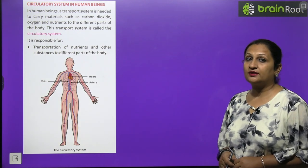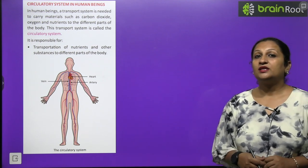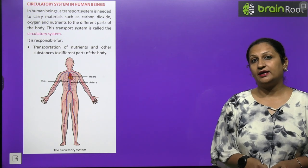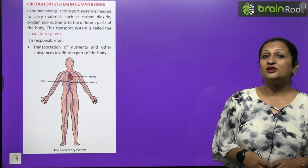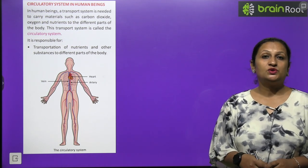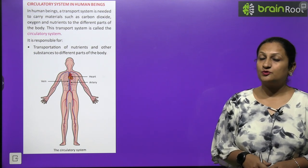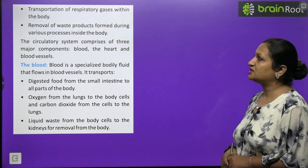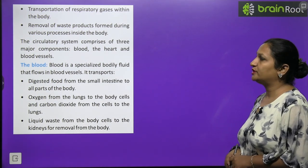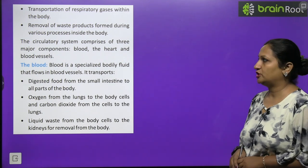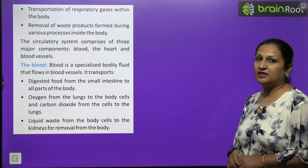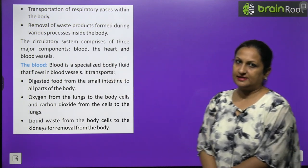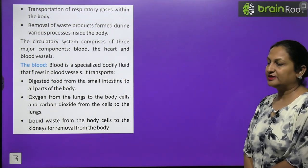The circulatory system delivers nutrients to every cell so that oxidation can occur, brings oxygen to each cell so it can oxidize food, transports carbon dioxide out of the body, and also handles transportation of respiratory gases and removal of waste products. The circulatory system comprises three main components: blood, heart, and blood vessels.